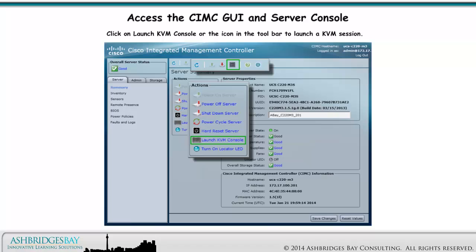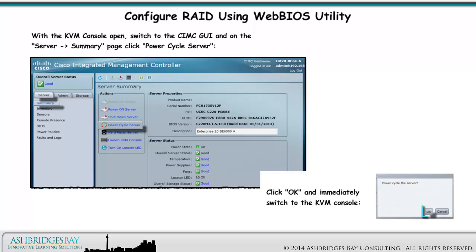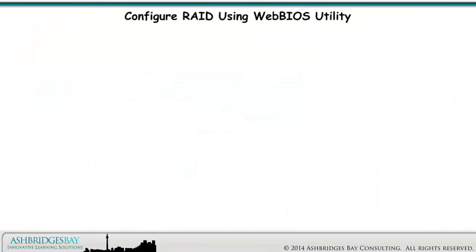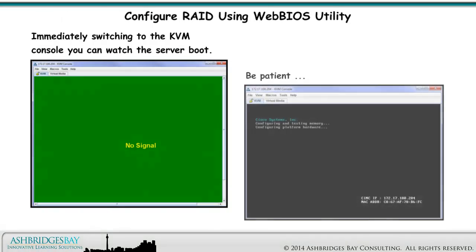Click on Launch KVM Console or the icon in the toolbar to launch a KVM session. With the KVM console open, switch to the SIMC GUI and on the Server Summary page, click Power Cycle Server. Click OK to the dialog box and immediately switch to the KVM console. Immediately switching to the KVM console, you can watch the server boot. Be patient.